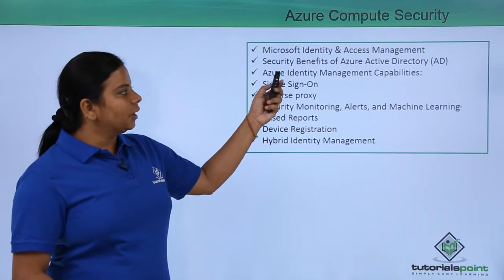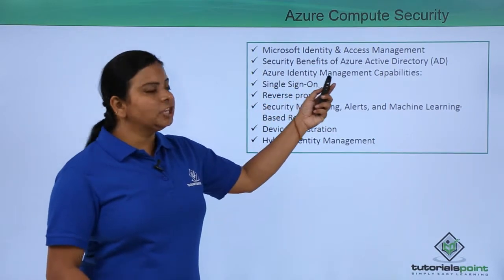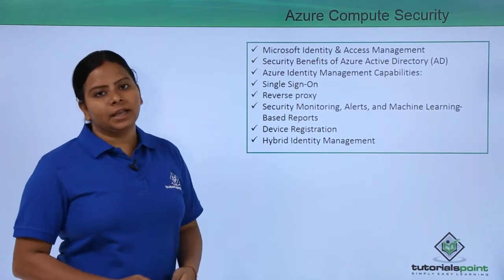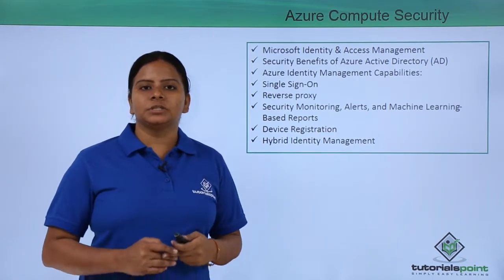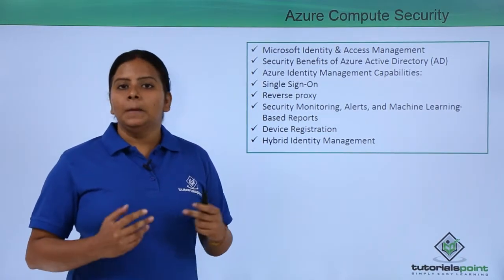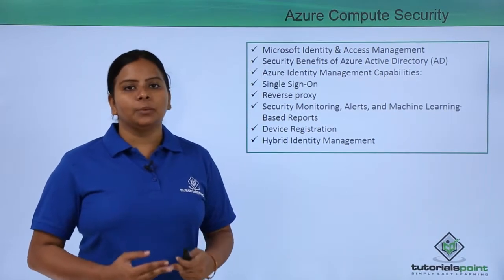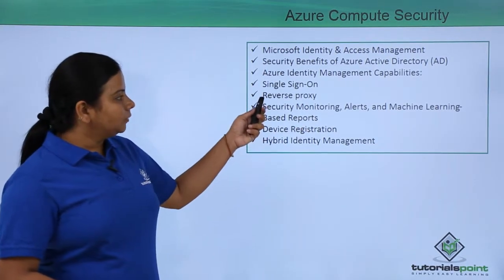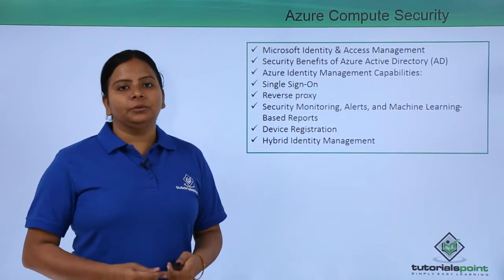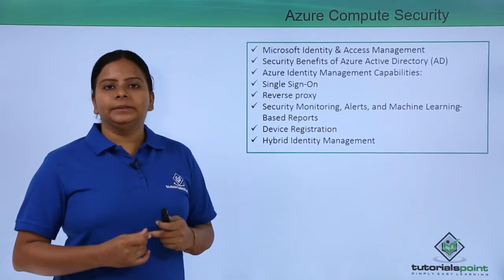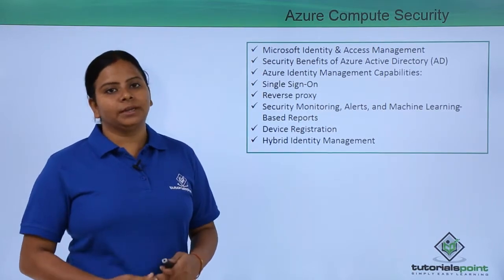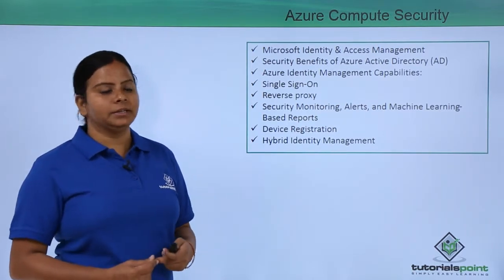You can also use identity management capabilities which provide you a single sign-on, so you can sign on once and get access to the applications. Multiple separate sign-on processes are not required. You also have a reverse proxy — you can create application proxy services and use this reverse proxy to get access to the applications you have created.